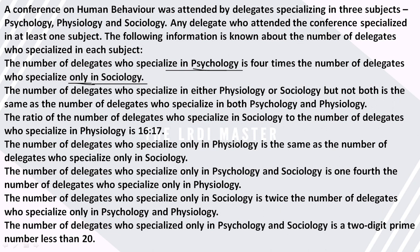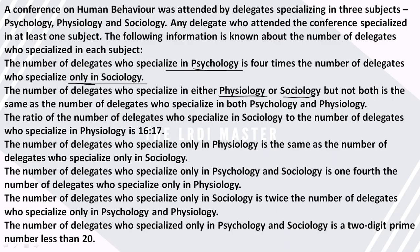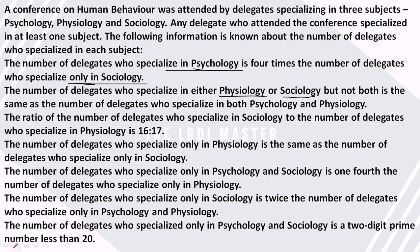The number of delegates who specialized either in physiology or sociology but not both — that means this part of physiology only and this part of sociology only, but not both. Since we can't directly use this yet, we will skip this point for now.